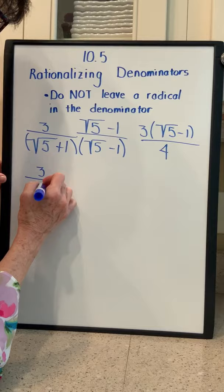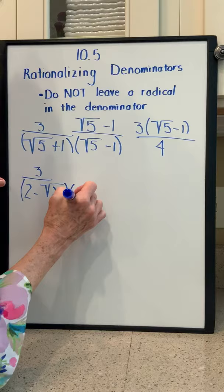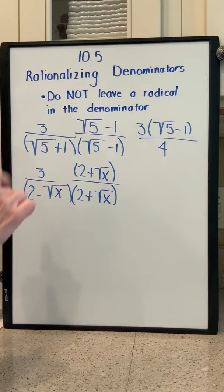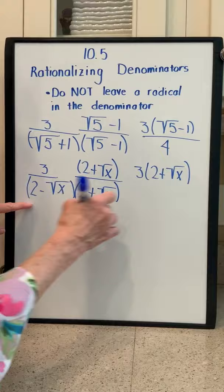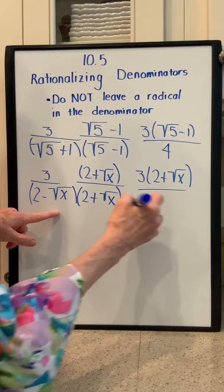Let's look at 3 over 2 minus the square root of x. This is another problem where we need to multiply by a conjugate. We're going to multiply by 2 plus the square root of x over 2 plus the square root of x. In the numerator that gives 3 times 2 plus the square root of x. In the denominator, when you FOIL it out, 2 times 2 is 4, the outer and inner terms equal 0, and minus the square root of x times the square root of x is minus x. So the answer is 3 times the quantity 2 plus square root of x, all over 4 minus x.